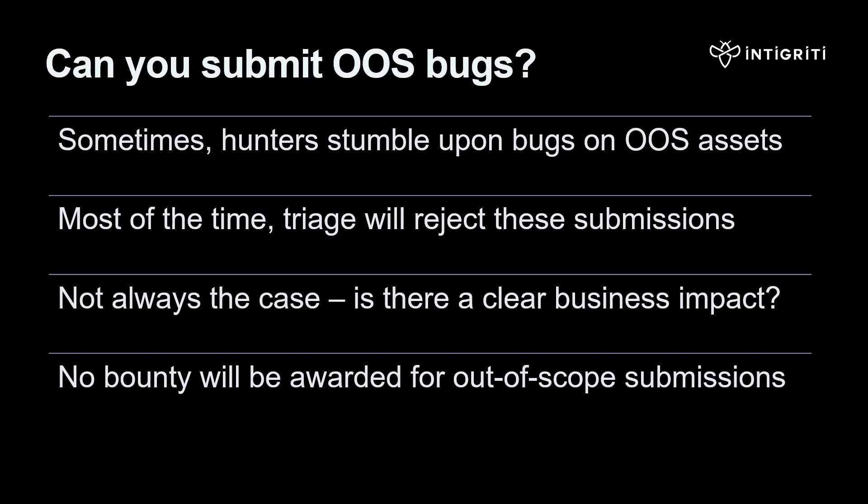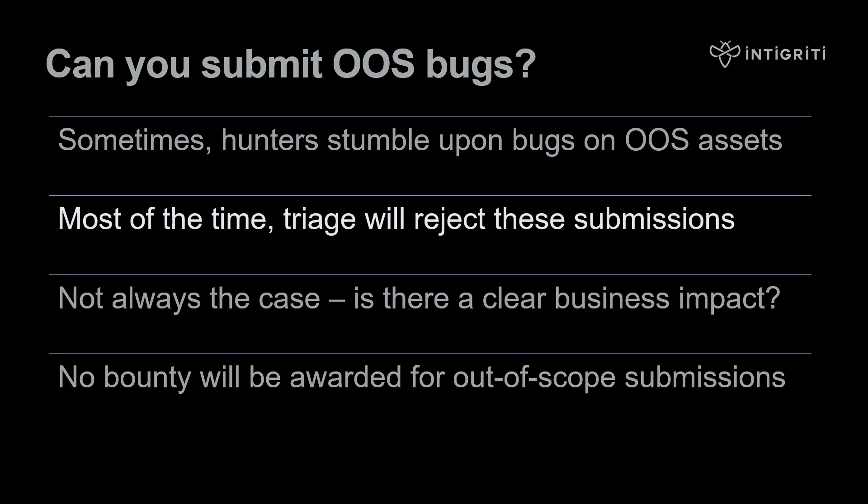Can you submit out-of-scope bugs? If you stumble upon a vulnerability on an out-of-scope domain — not actively testing it, but finding it inadvertently during your research — you may still choose to disclose it to the program. But most of the time, triage will reject these submissions as out of scope. When a submission is rejected, the researcher does not receive a bounty or reputation points, and it will also negatively affect their validity ratio.